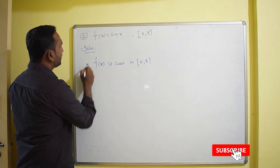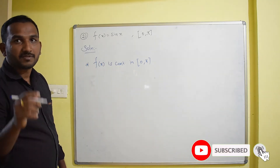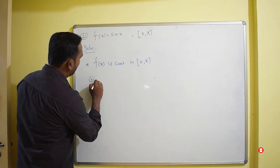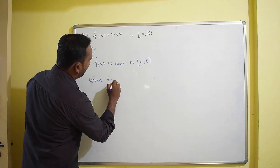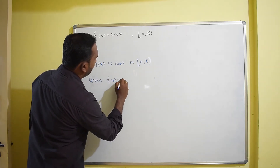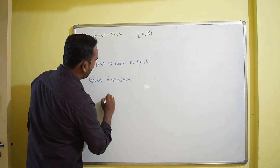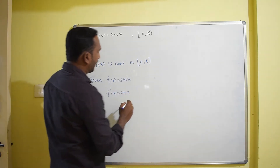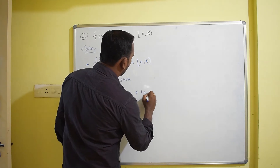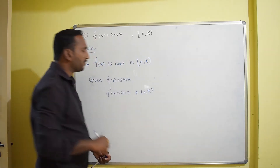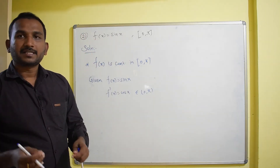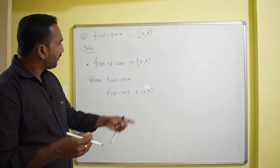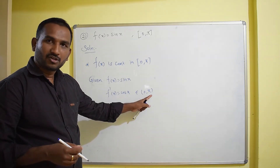The second condition: we want to find the derivative of the function. Given f(x) = sin x, then f'(x) = cos x, which exists in the open interval (0, π). So f(x) is differentiable in the open interval (0, π).